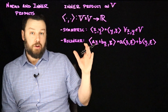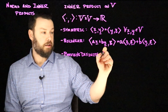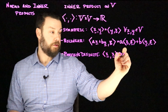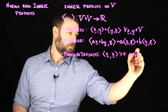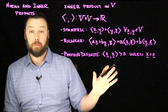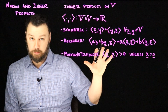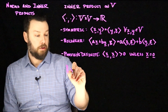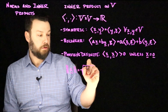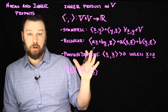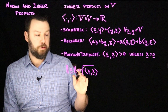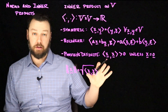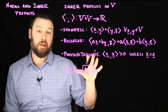We also require that an inner product be positive definite: the inner product of a vector with itself must always be greater than zero, unless x is the zero vector — in which case it's zero, but it can never be negative. These are the ingredients needed for an inner product. Notably, we can use an inner product to define a norm: the norm of a vector is the square root of the inner product of that vector with itself, generalizing Euclidean length.